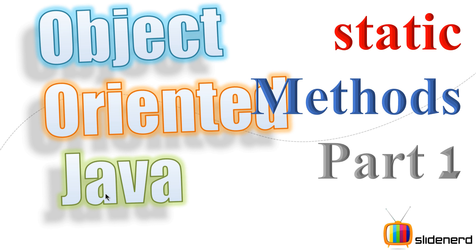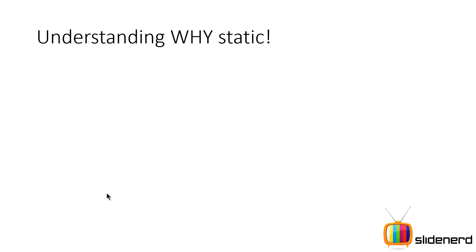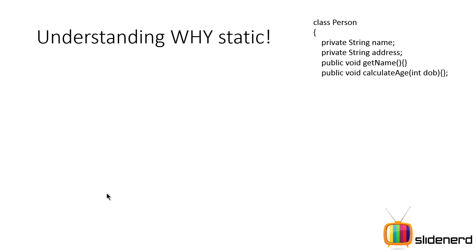So first let's talk about static methods and try to understand why do we need them. So here we have a class Person. A person can have attributes like name and address. You can have a method like GetName that returns the name of the person. You can have CalculateAge where it takes an integer argument representing the date of birth. For purpose of understanding in this video, what I am simply doing is calculating the age from the given date of birth.